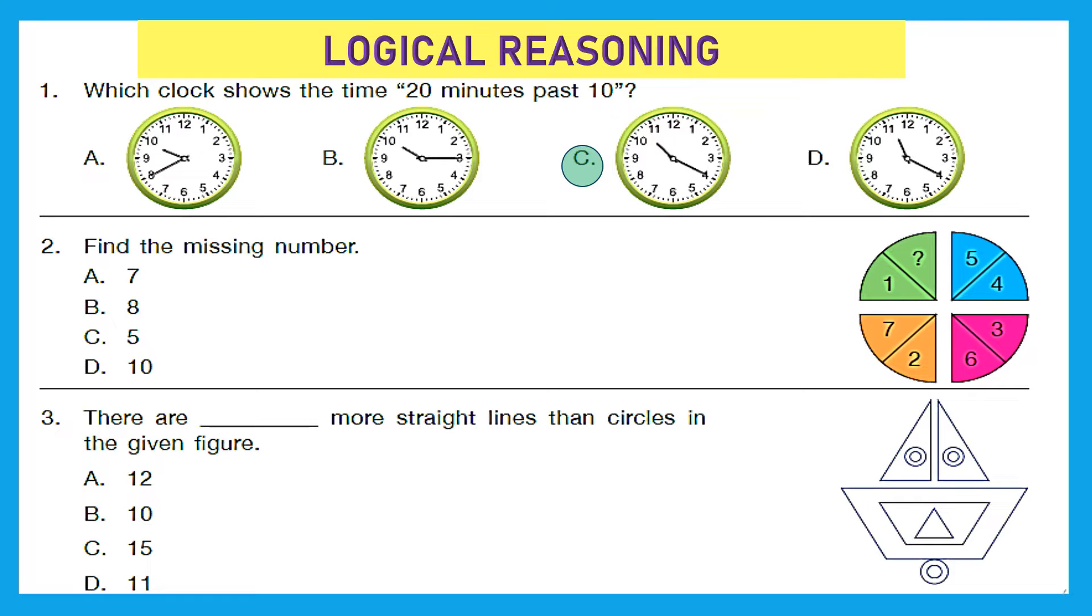Question 2. Find the missing number. Let's see the pattern. So there are four parts and in four parts there are two numbers. Let's see first one, it is 5, 4. What is the sum of 5 and 4? It is 9, right? Let's see the other one, it is 6, 3. What is the sum? It is again 9. Let's see the next one, that is 7 and 2. Again the sum is 9. So here the logic is the sum of two numbers in each part is 9. So at question mark it should be 8, option B, because 1 plus 8 will give you 9.